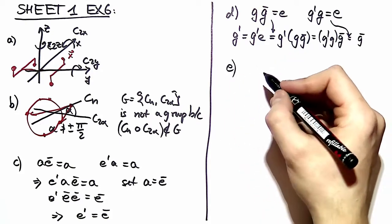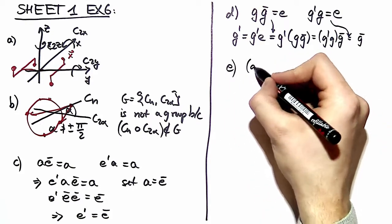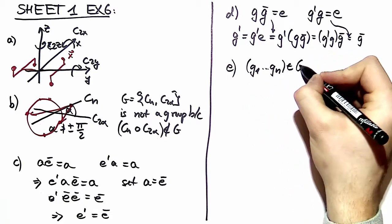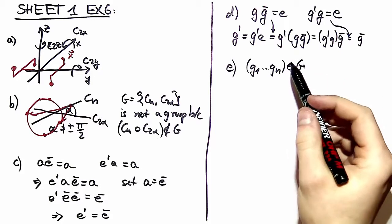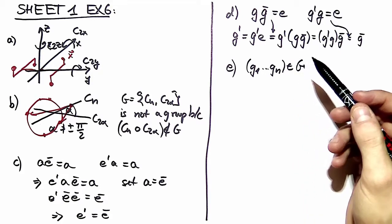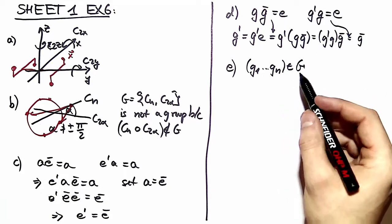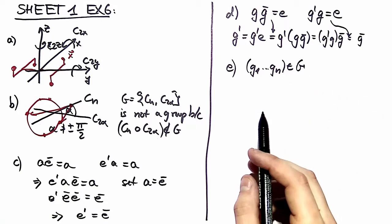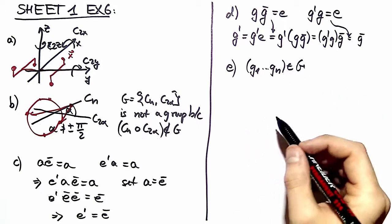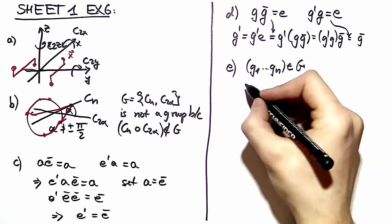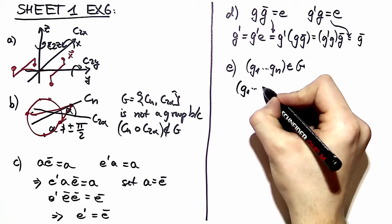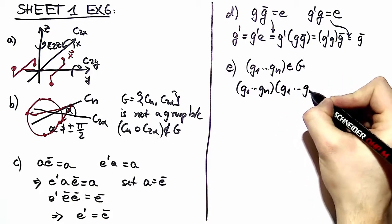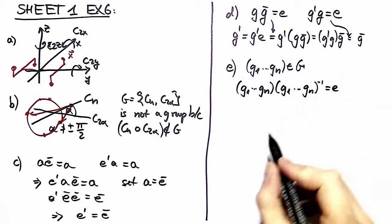In E we're investigating a group element consisting of multiple other group elements and we want to give a handy expression for its inverse. First it's always good to write down the definition and work on from there. So we write down the definition for the inverse of this element to the minus one is equal to the identity.